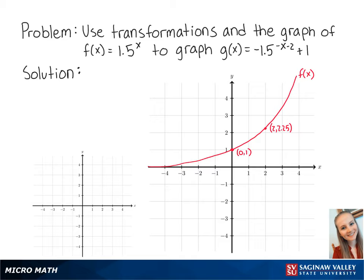For this problem, we want to use transformations and the graph of f of x equals 1.5 to the x to graph g of x equals negative 1.5 to the negative x minus 2 plus 1. We can rewrite this as g of x equals negative f of negative x plus 2 plus 1.